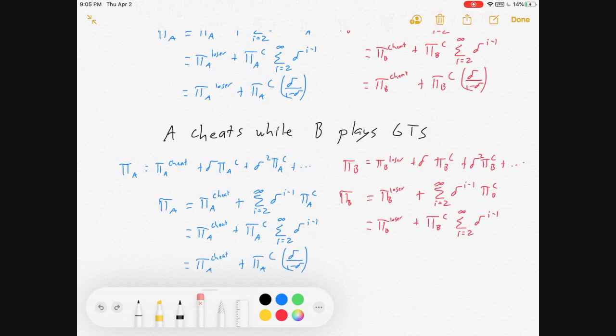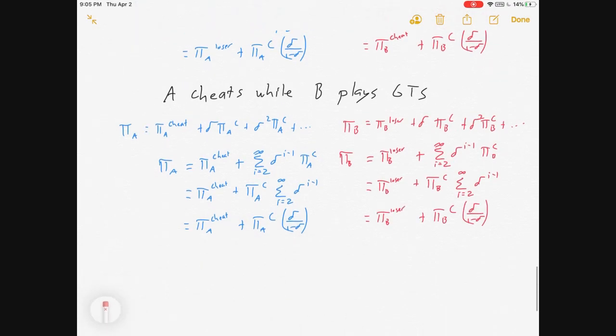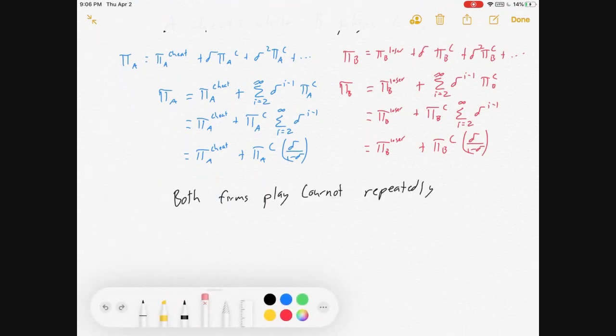So A gets cheating plus discounted Cournot's stream, B gets losing plus discounted Cournot's stream. Great. And last, if they both just play Cournot repeatedly, then it's just going to look like that: 1 over 1 minus delta times the Cournot profits.